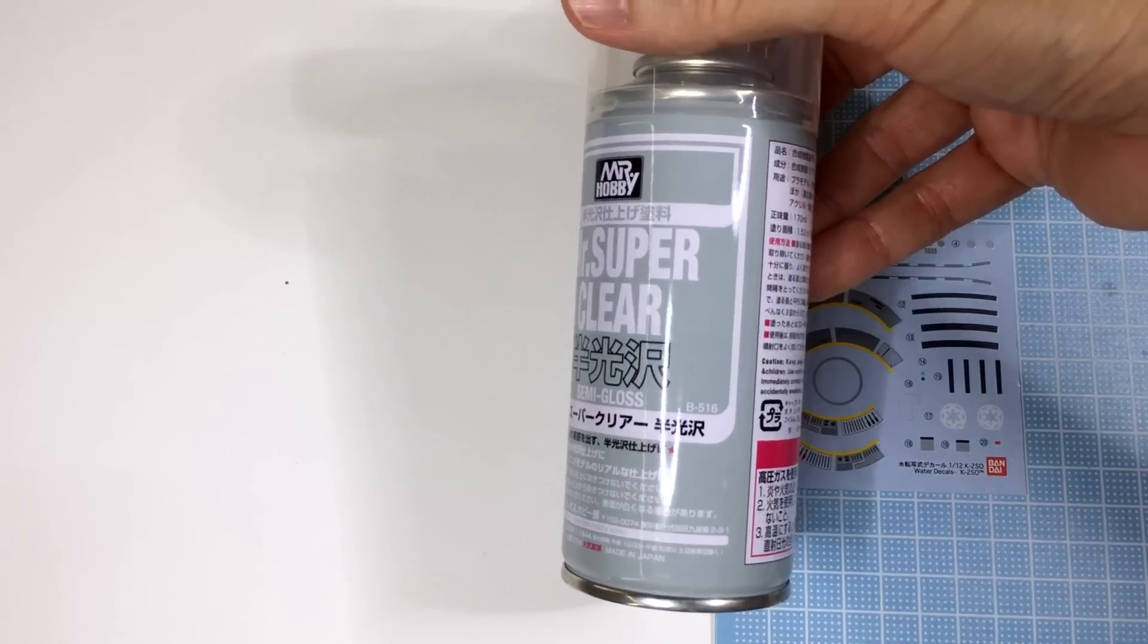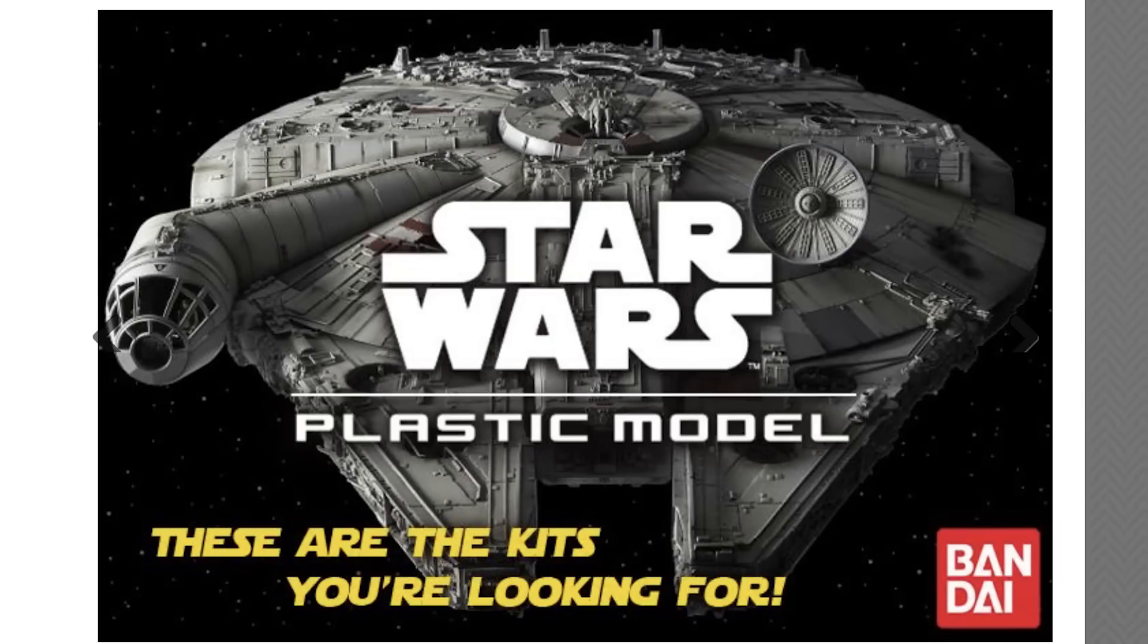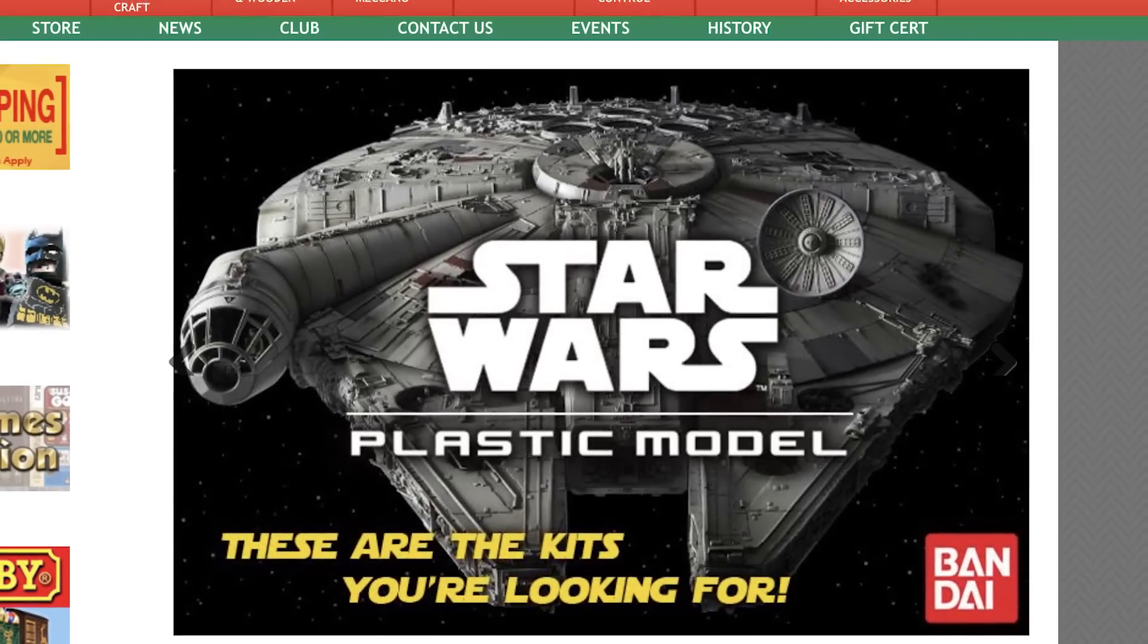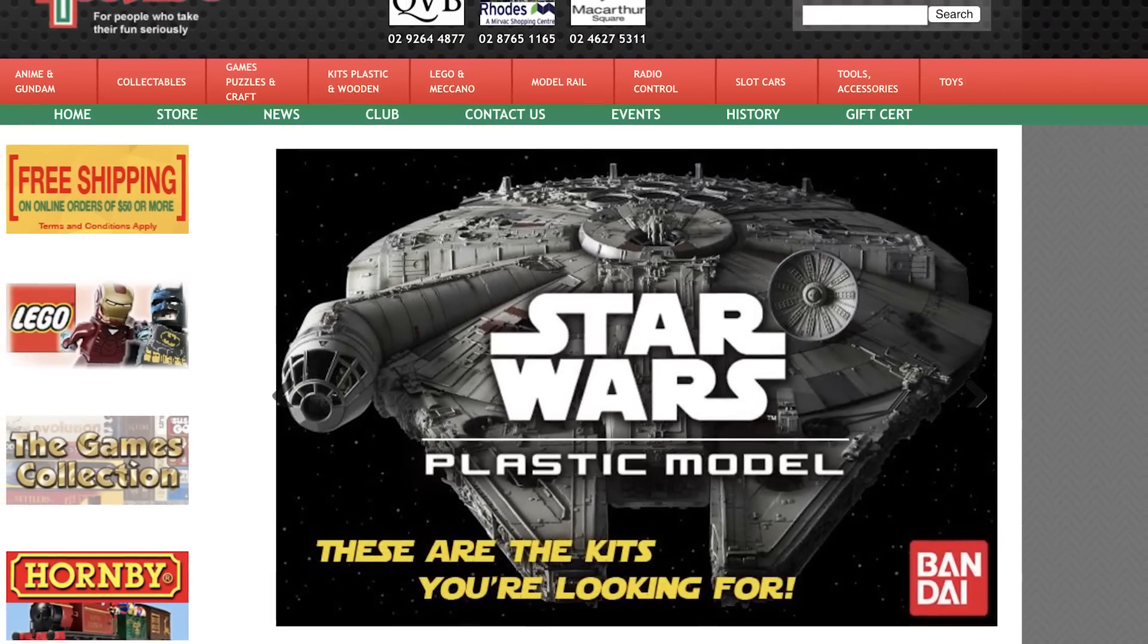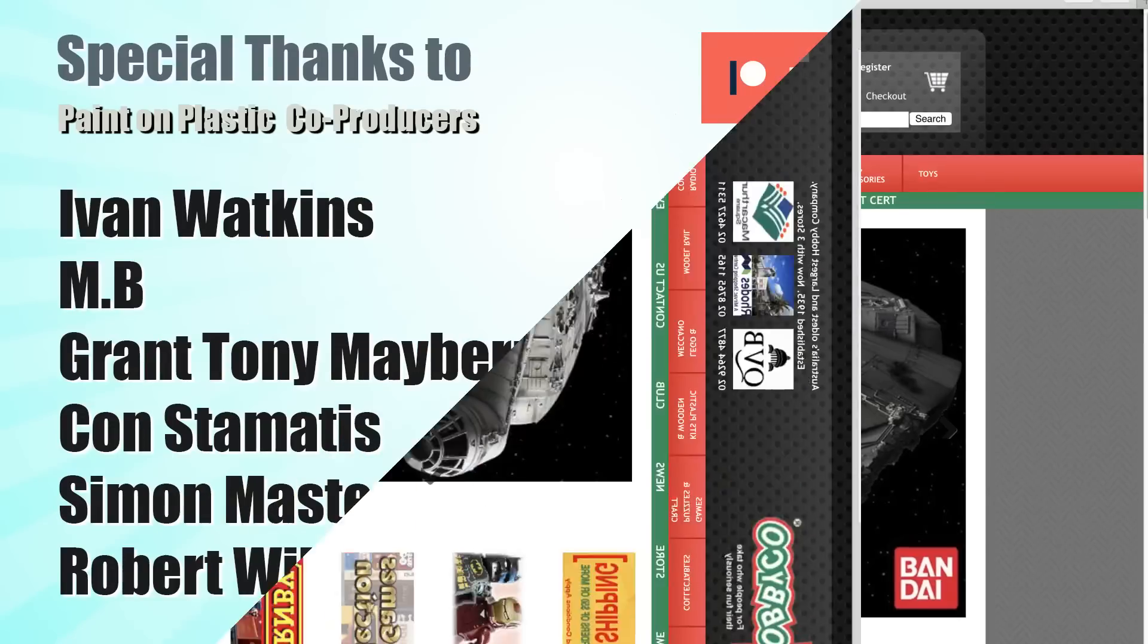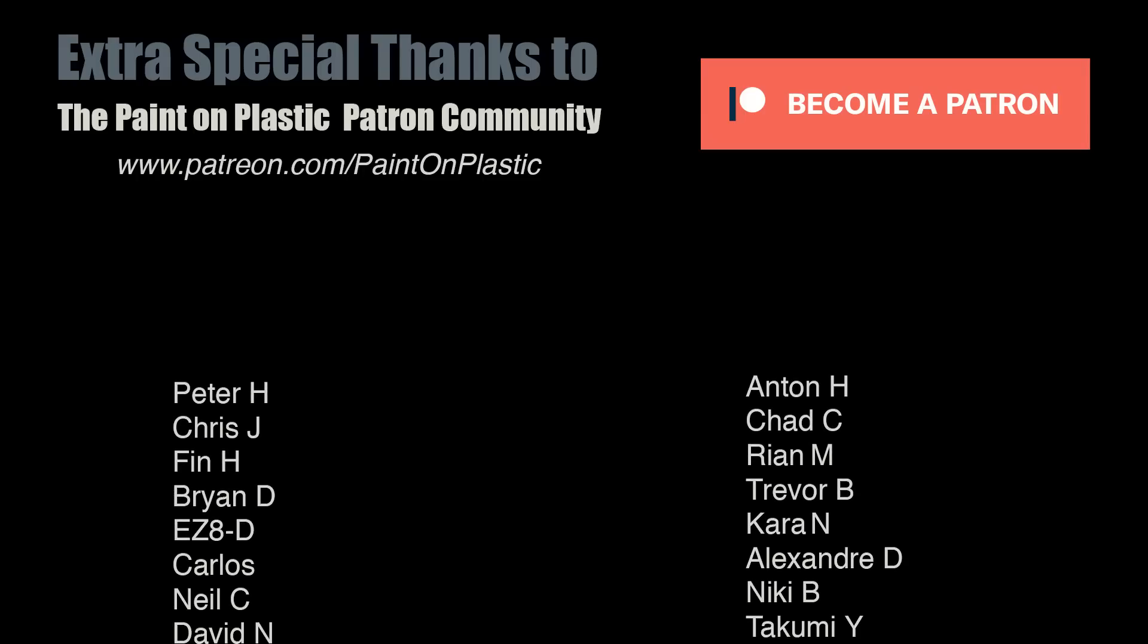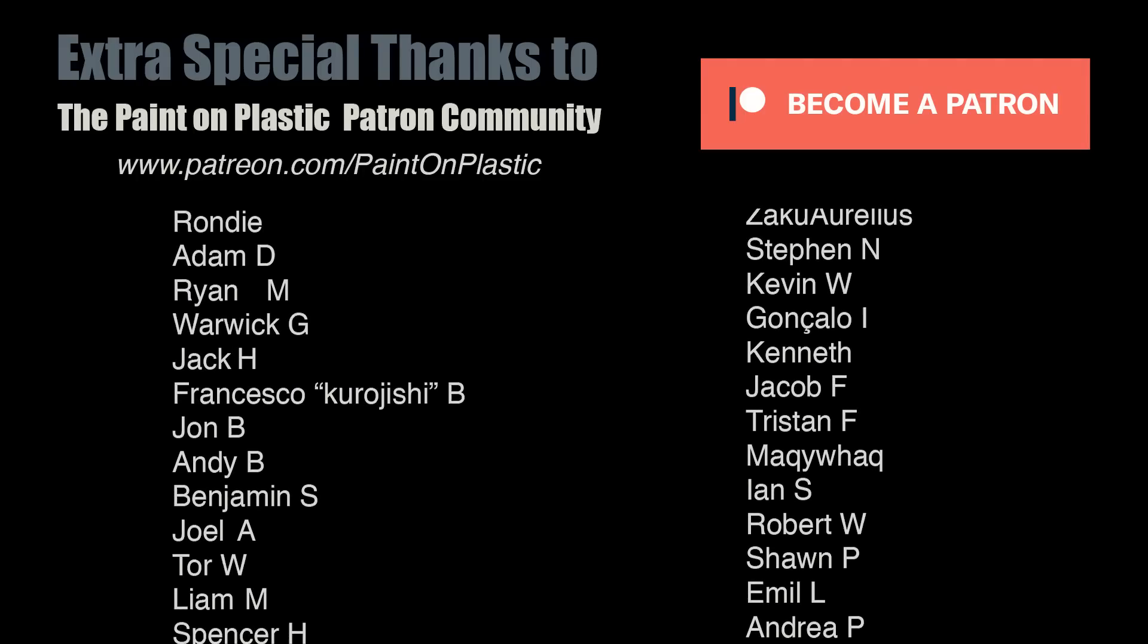Very quick word on gloss coats, I use this Mr. Super Clear, a quick shot before and after to seal the decal in. I get my Star Wars kits, paints and tools from my local hobby shop Hobbyco. Let's do our part, support local and check them out if you're also in Australia. Get your local hobby shop to contact Ryan at Hobbyco and they will get Star Wars in for you, cool right. Huge shout out to my top patron supporters Ivan, Embi, Grant, Con, Simon and Robert thanks guys and an extra special shout out to the paint on plastic patron community who make these videos happen thanks guys.